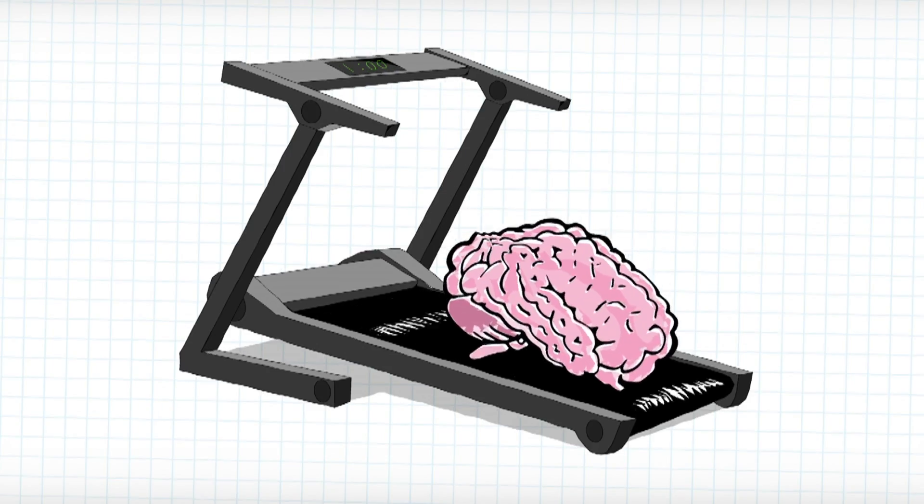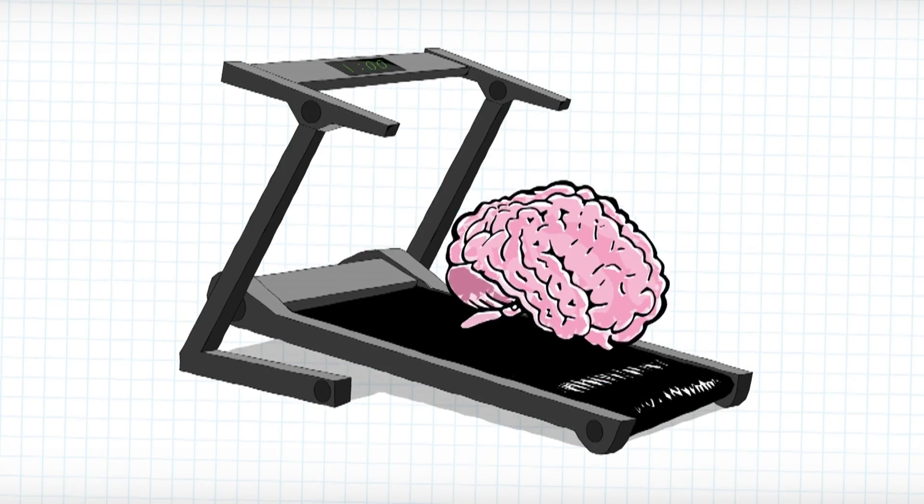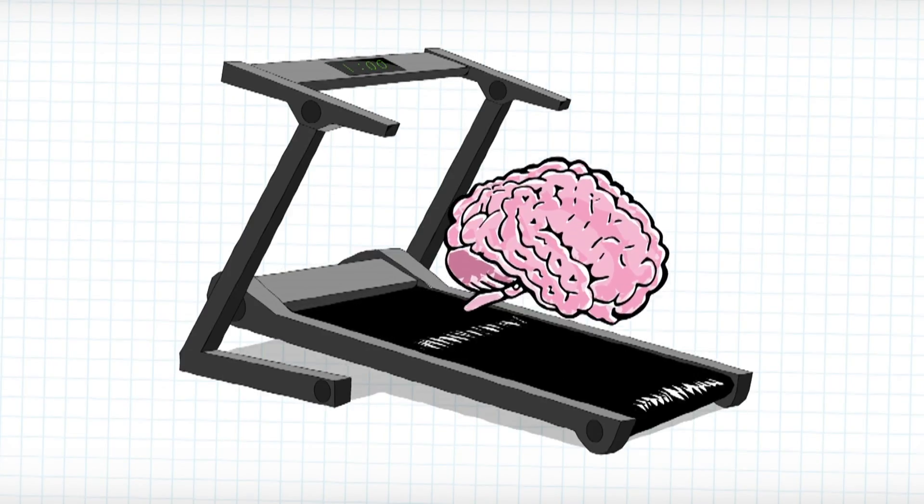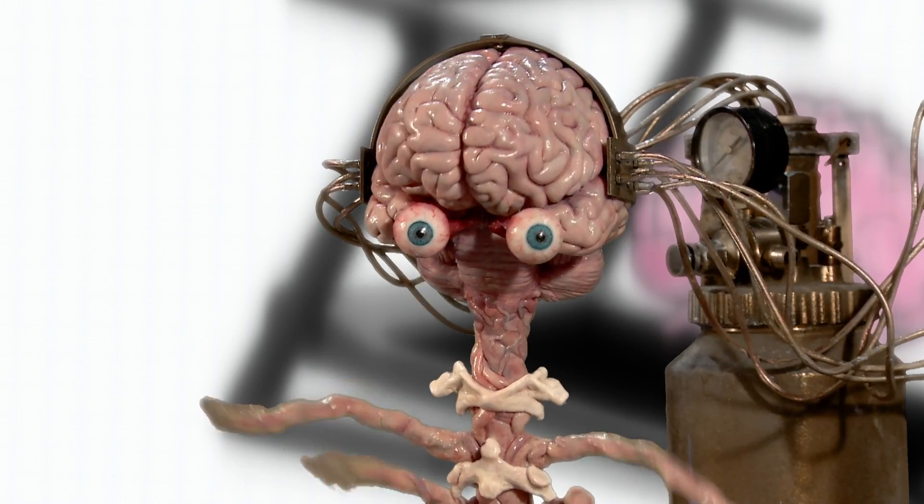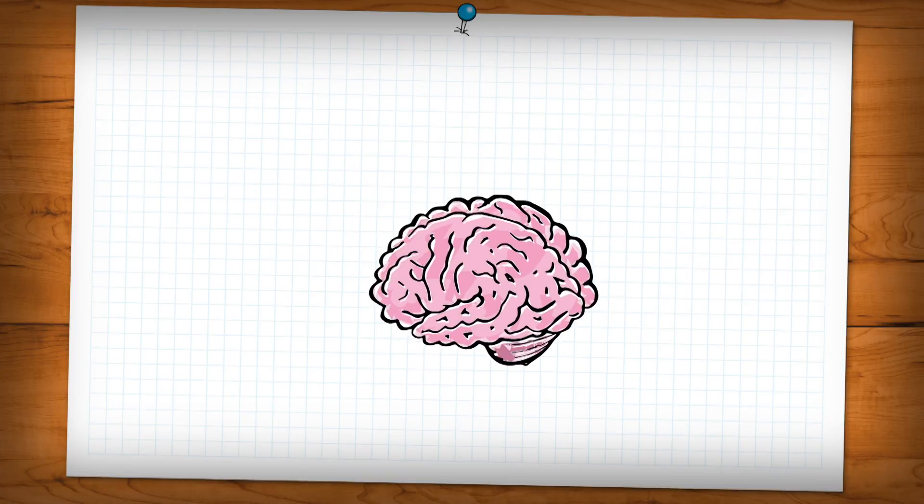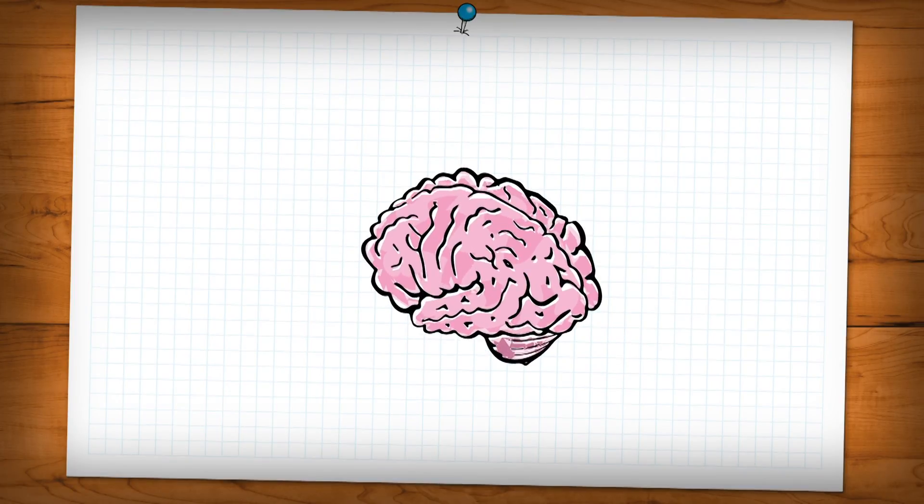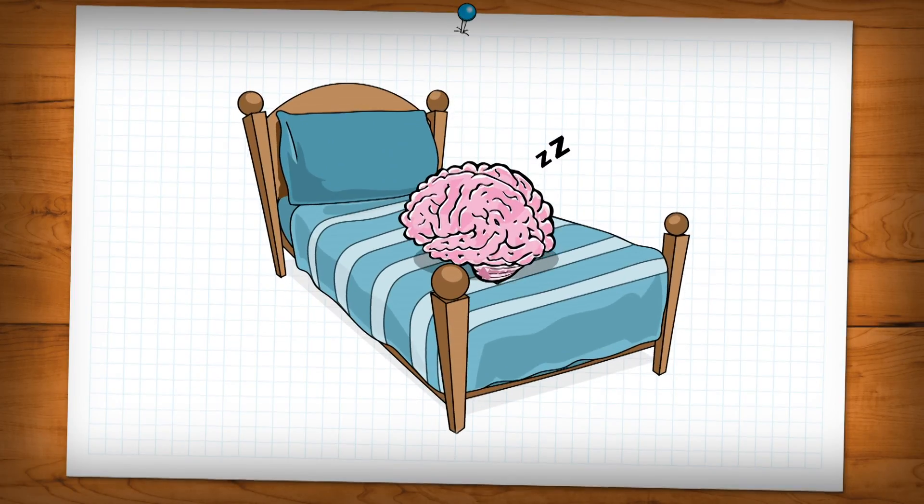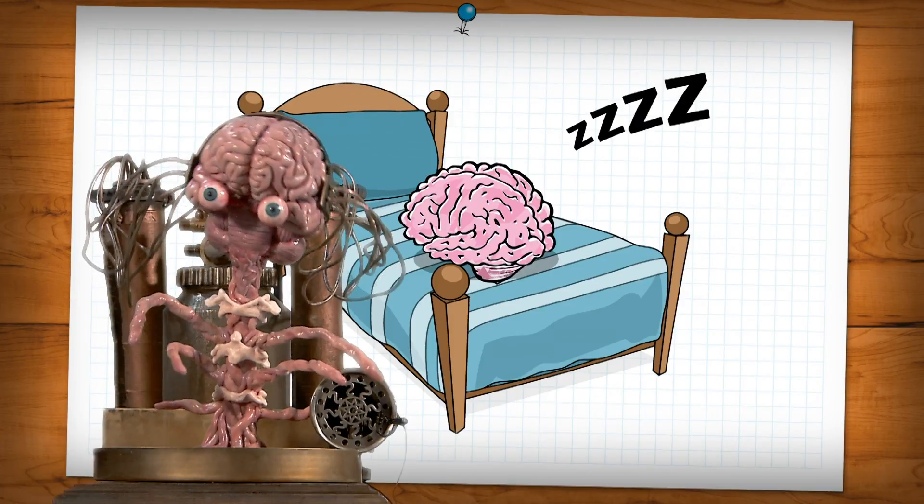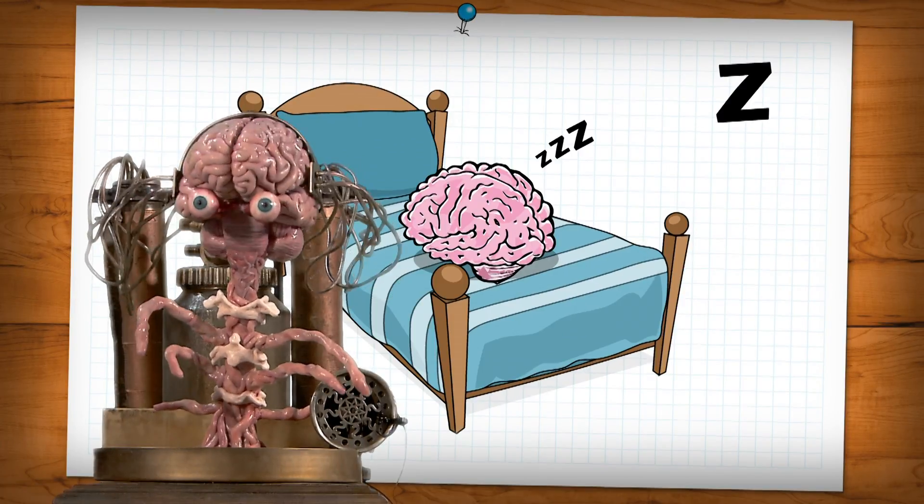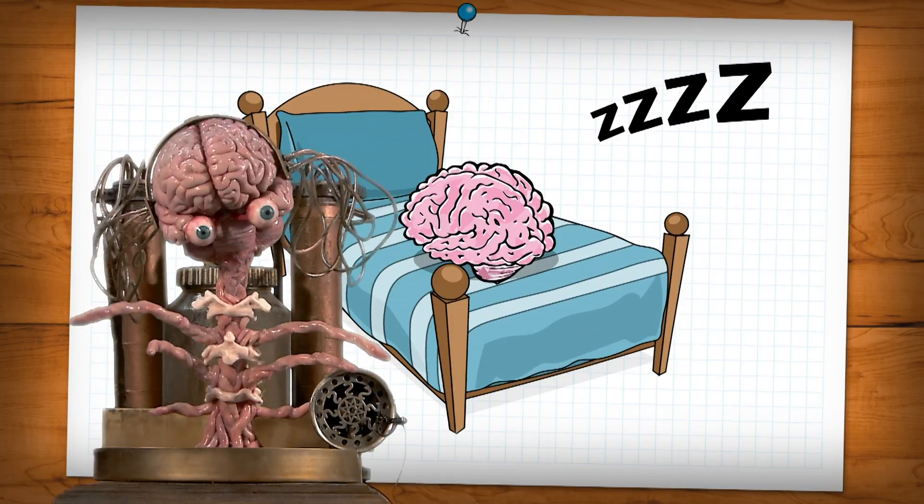But there are things you poor blockheads can do to improve brain performance. You can exercise. Regular exercise helps maintain the brain and keeps brain cells healthy. Which is why I like to start every day with a hundred press-ups. It's not a pretty sight. A good night's sleep is also great for the grey matter, helping to sharpen both memory and attention. And that's not the only way you can improve brain function.